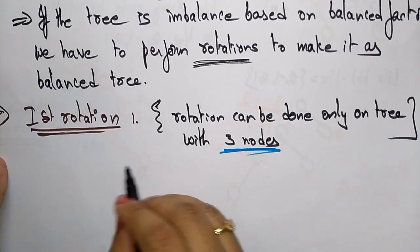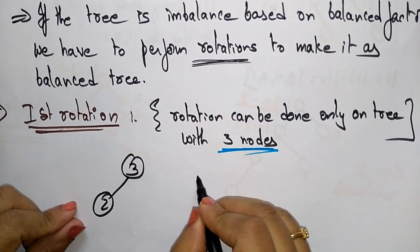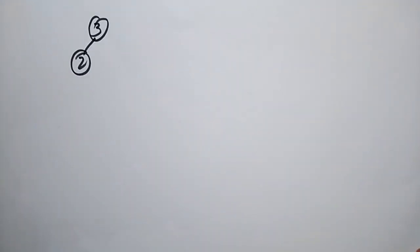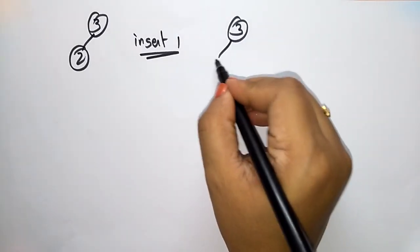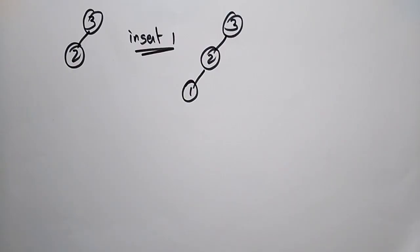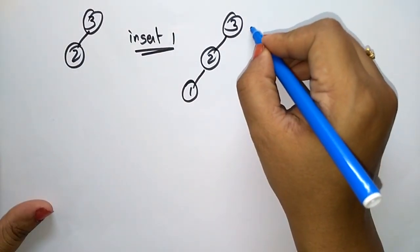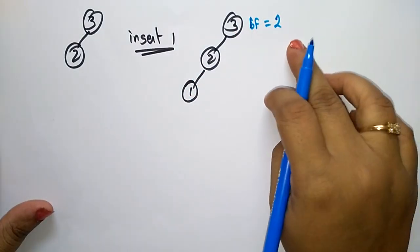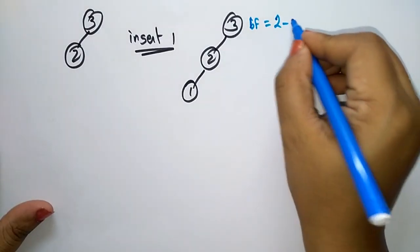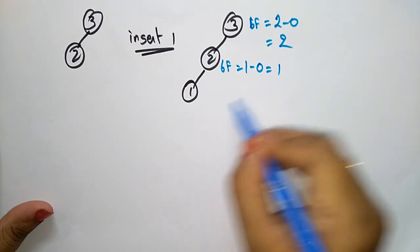Let me take the initial tree as 3 and 2. This is a binary tree. Now I am inserting 1 into this tree, giving us 3, 2, 1. After inserting, you have to check whether the tree is balanced or not by finding the balance factors. The balance factor for the root node: height of the left subtree is 2 and the right subtree is 0, so BF equals 2. For node 2: height of left subtree is 1 and right subtree is 0, so BF equals 1. And node 1 has BF of 0.